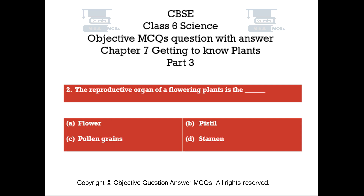Question number 2. The reproductive organ of a flowering plant is the. Option A: Flower. Option B: Pistil. Option C: Pollen grains. Option D: Stamen.